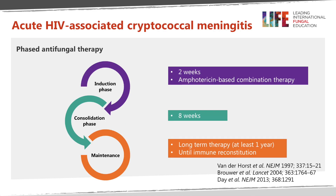This introduces the three phases of treatment, a strategy based on a landmark study led by Charles van der Horst published almost 20 years ago, showing better outcomes with an initial induction phase of two weeks of amphotericin B-based combination treatment, followed by consolidation with high-dose fluconazole, and then maintenance treatment with 200 milligrams a day of fluconazole for at least a year, until immune reconstitution has occurred with antiretroviral therapy in HIV-associated infection.